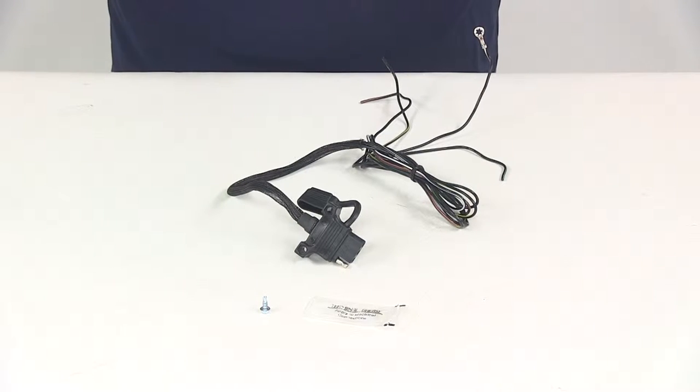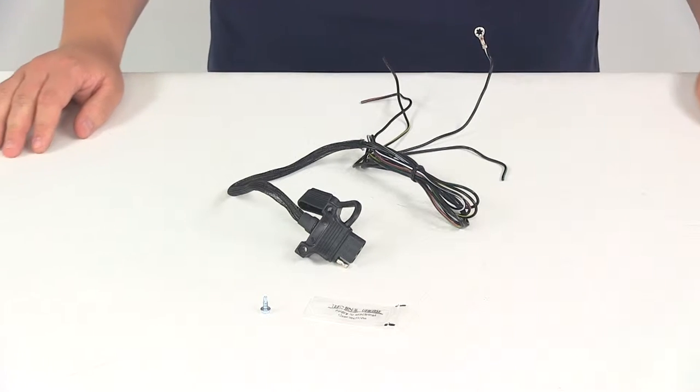Today we're going to be taking a look at part number HM48030. This is the Hopkins Endurance 4-Way Flat Trailer Connector Socket for the vehicle end.